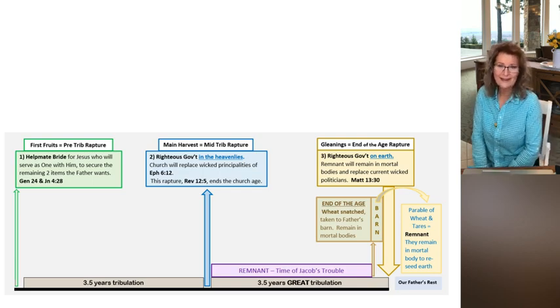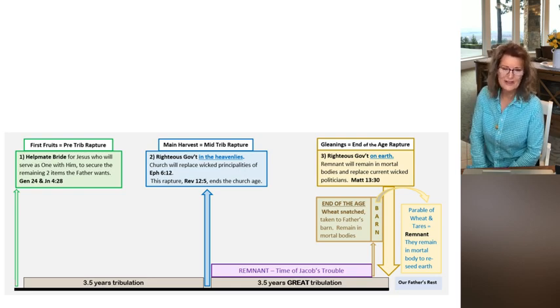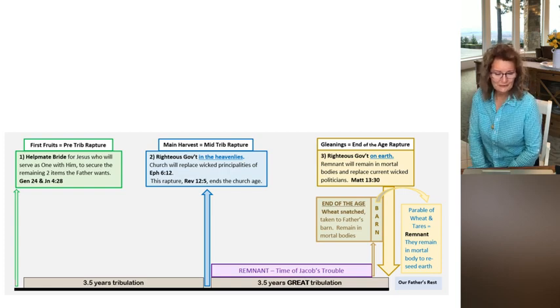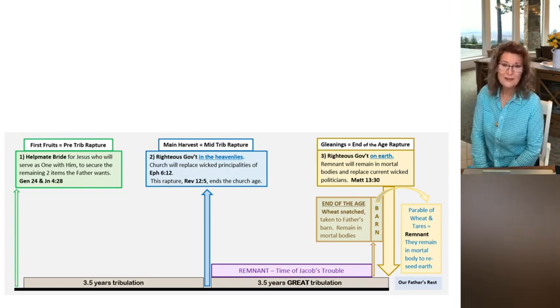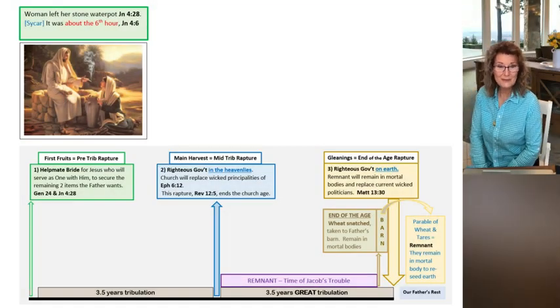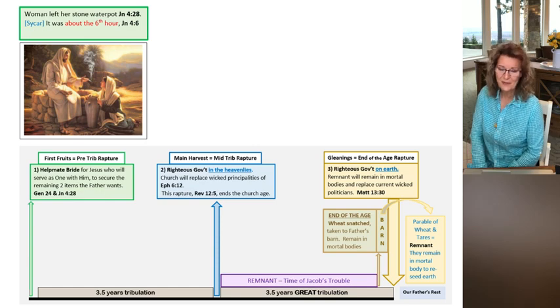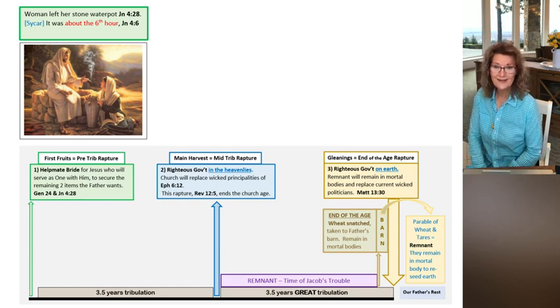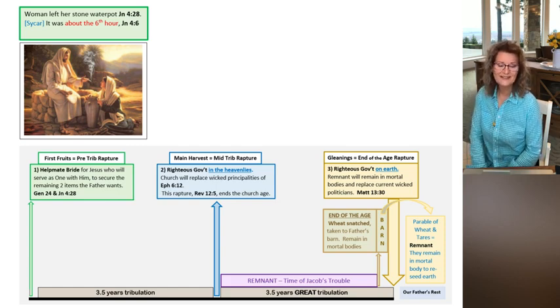What I have you looking at here is that the pre-trib rapture is of the helpmate bride for Jesus, who will serve as one with Him. That's the first fruits rapture, represented through the woman who left her stone water pot, the woman at the well in John 4. In verse 28, she leaves her water pot, and that happened in Sychar. The Scriptures tell us it was about the sixth hour, John 4:6.